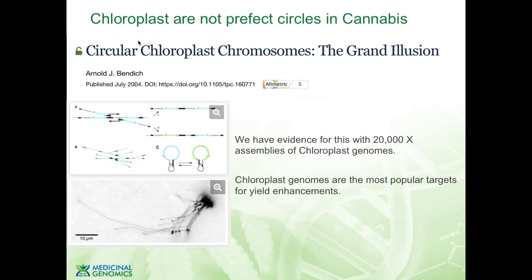We know there are nuclear plastid sequences — it's common with organelle sequences to transfer sequence to the nucleus, and they can be difficult to distinguish. Long-read data helps clean that up, and you can confirm with methylation status: the chloroplast genome is unmethylated, while nuclear sequences are usually methylated. We used a combination of these tools to sort out which contigs were nuclear versus different chloroplast haplotypes. There is an interesting paper from Arnold Bendage showing chloroplast genomes are very rarely circular — they rely on inverted repeats to replicate, creating linear photocompetent contigs, which is what we think we're seeing. Many differences in the haplogroups are homopolymer errors or repeats, but some SNPs look like real variants that might play a role in understanding yield.